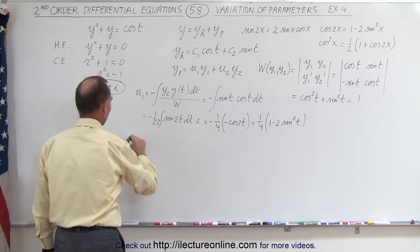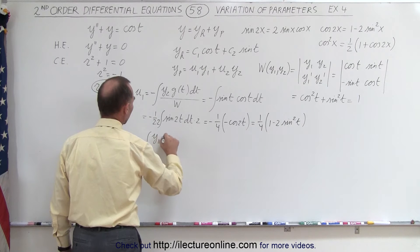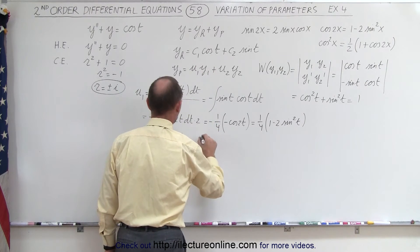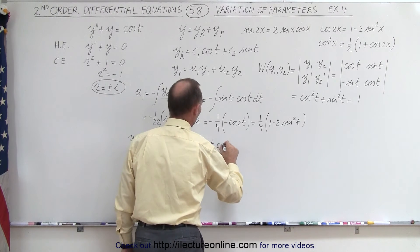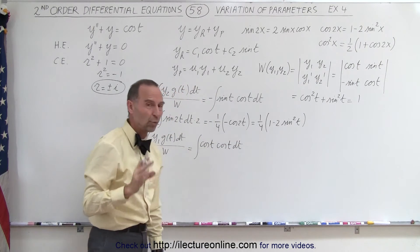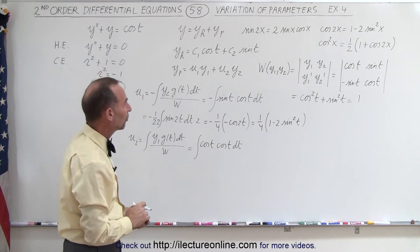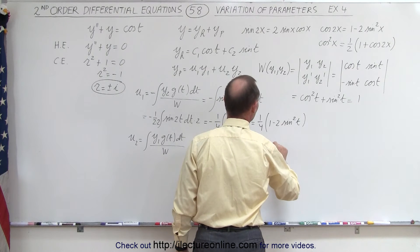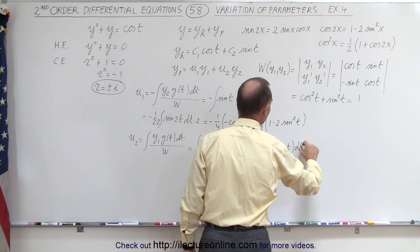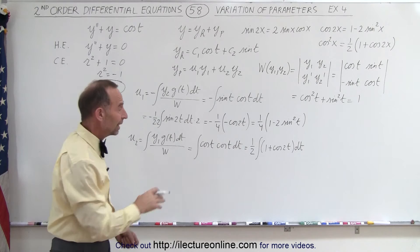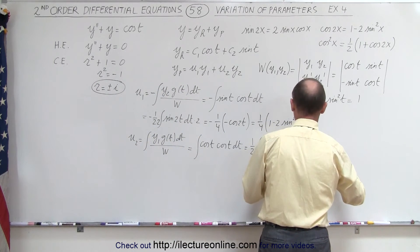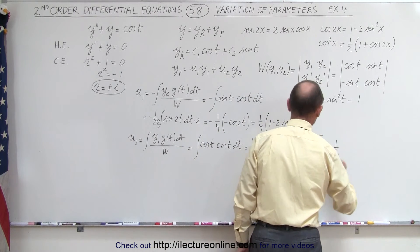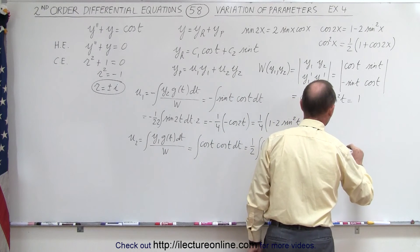Now we need to find u2. u2 is equal to the positive integral of y1 times g of t dt divided by the Wronskian. y1 is cosine of t, so that gives us the integral of cosine of t times g of t, which is cosine of t, times dt — giving cosine squared of t. The Wronskian is 1. We replace cosine squared of t using the identity, giving one half times the integral of (1 plus cosine of 2t) dt, which is much easier to integrate.